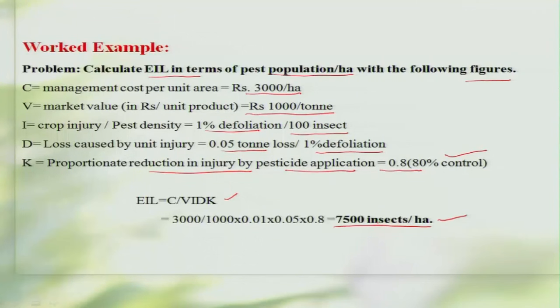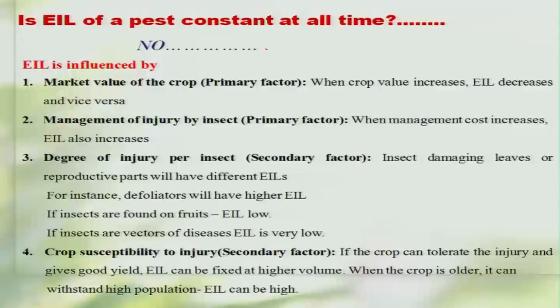The question arises: when are we going to take control measures — at the economic injury level? No. If we take control measures at the economic injury level, then the economic injury has already started and that much loss will already have been incurred by the farmer. We have to find a point below the economic injury level to prevent the pest population from reaching it. Also, is the economic injury level the same at all times for all crops? No, it is not. Economic injury level is a fluctuating, relative thing which mainly depends on the market value of the crop.